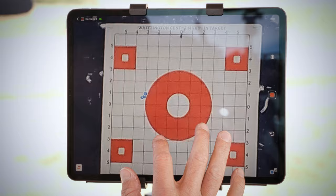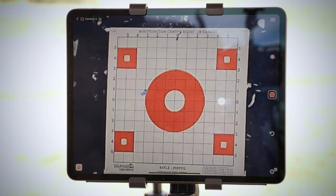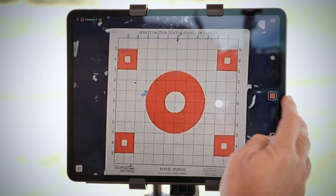We just put these three rounds downrange. If we want to take a picture of that and save it for later, we'll simply press the orange square. If we'd like to take a video of our next session, simply